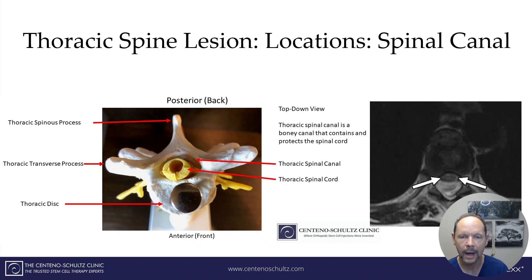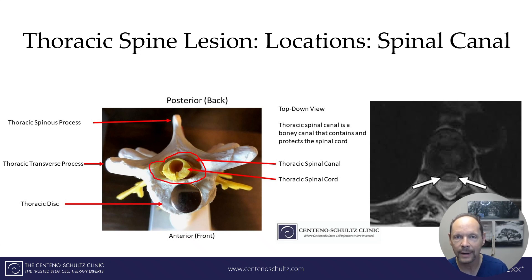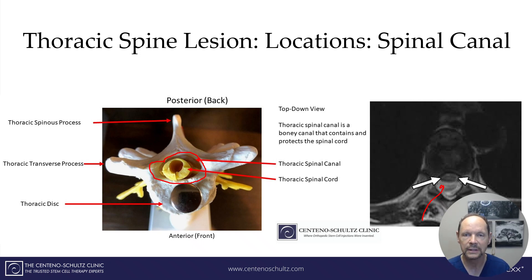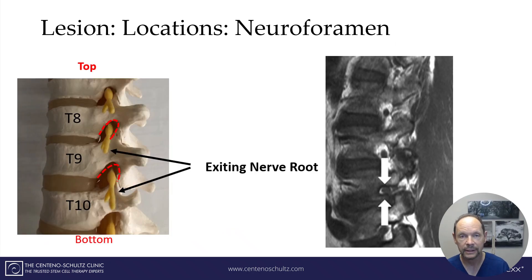What about the spinal canal? Of course, there can be a lesion there. This is a cross section of the thoracic spine — this is posterior, otherwise known as the back, and this is the front. You can see the spinal canal is this bony canal that houses the cerebrospinal fluid and the spinal cord. And here is a lesion inside of the spinal canal — it's actually a disc protrusion, almost a herniation.